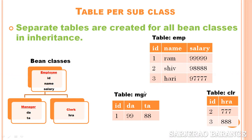For the Manager subclass, a table — let's say MGR — will be created, and columns for the subclass-specific properties (like 'data') will be created there. Additionally, an extra 'id' column will also be created which acts as a foreign key referencing the EMP table (the superclass table). Same thing for the Clerk subclass: a CLR table will be created with columns for Clerk's properties (like 'hr') and a foreign key 'id' column referencing the EMP superclass table.